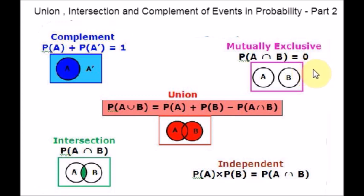In probability, an event is always associated with a random experiment. When something happens, we say an event has taken place. For example, in an experiment of flipping a coin, there are two possibilities — either we could get a tail or a head. This is called an event.